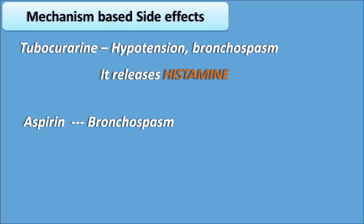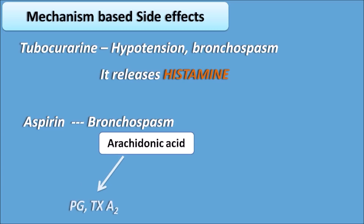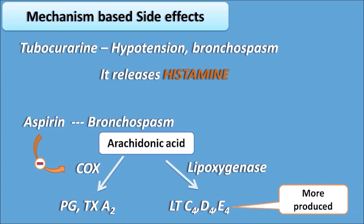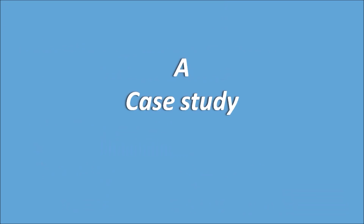Aspirin also produces bronchospasm. Arachidonic acid is converted to prostaglandins and thromboxane A2 by cyclooxygenase, and also to leukotrienes C4, D4, and E4 by lipoxygenase. Aspirin inhibits cyclooxygenase, so arachidonic acid is shunted toward more leukotriene production. Leukotrienes are bronchoconstrictors, causing bronchospasm — so aspirin must be given carefully to asthmatic patients. Interrelate side effects with their underlying mechanism.